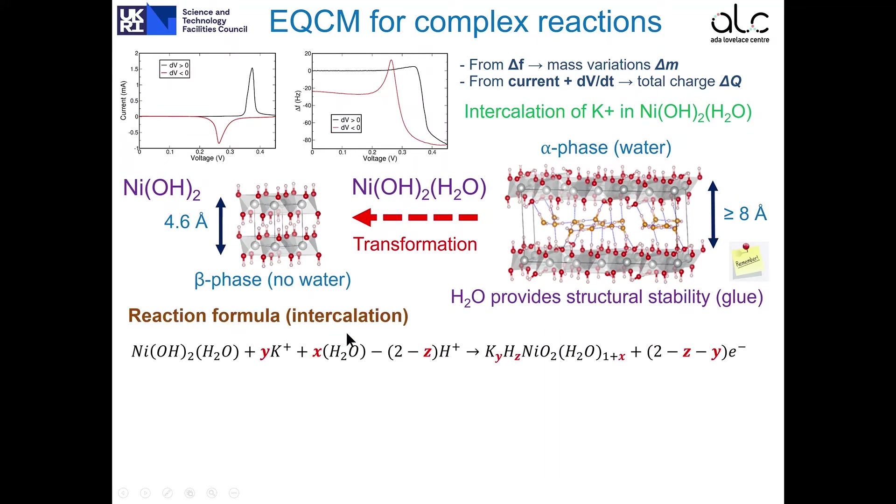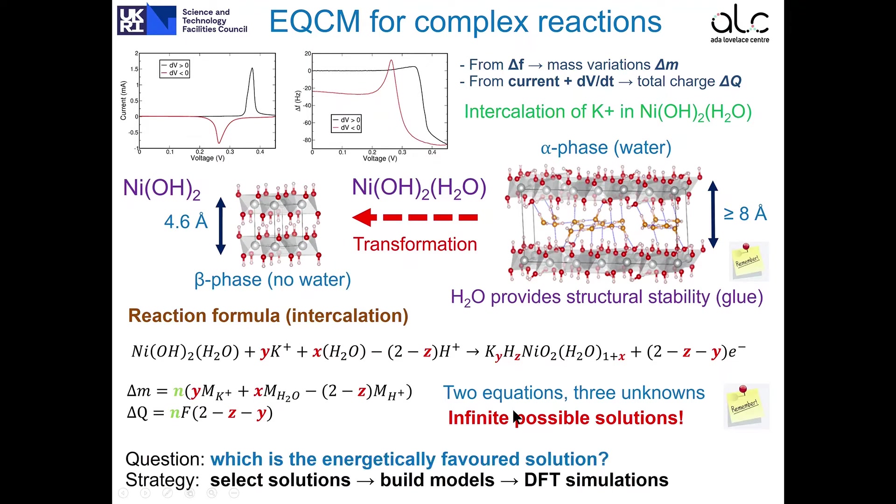When it comes to writing the reaction formula for the intercalation, we consider these species that participate in the reaction, each one with different stoichiometric coefficients. As a result, we have the stoichiometric formula for the material with the intercalated potassium plus an extra term that accounts for the charge balance. From the knowledge of the amount of moles of the prepared material before chemical reaction, n, and using the masses of the involved species and the Faraday constant, it is possible to write the equation for mass and charge conservation, where Δm and Δq are obtained from the experiments. So here we have two equations and three unknowns. Therefore, we have an infinite number of solutions, where two stoichiometric coefficients will depend on the third one. So the question that arises is, which is the energetically-favored solution among this infinite set?